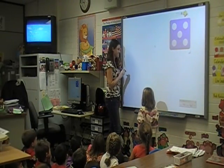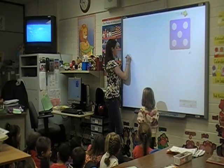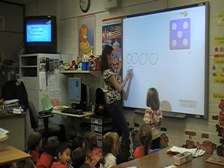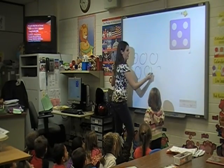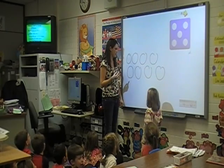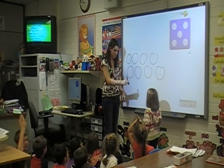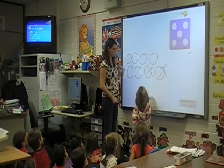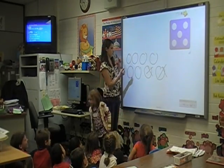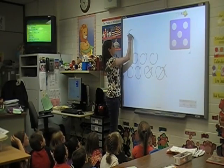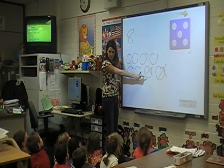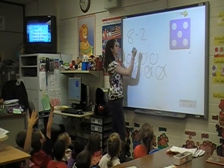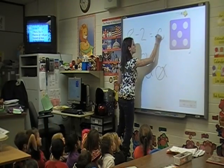I'm going to draw eight balls — one, two, three, four, five, six, seven, eight — and I'm going to take away two of them. Will you cross out two for me? One, two. So we originally had eight, correct? And then we crossed out two, so we have six left. Awesome.